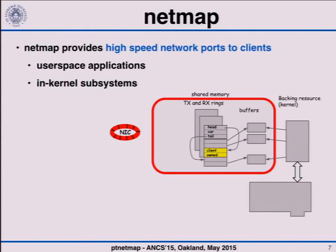When you move the head pointer — for example in a transmit queue — you are saying that some buffers now must belong to the kernel, meaning there are new packets to send. In a receive queue, this means you have finished working with this set of packets and the corresponding buffers can be reused to receive more packets. At the same time, the kernel updates the tail pointer. By moving the tail forward, it gives buffers to user space. In a transmit queue this means those buffers have been sent; in a receive queue it means new packets have been received.